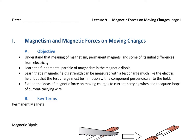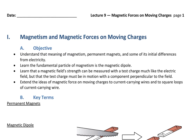We're starting in one chapter, so that would be Lecture 11, but building on that idea throughout the next two chapters. Let's take a look at our objectives. We want to understand the meaning of magnetism, permanent magnets, and some of its initial differences with electricity, and we'll continue to build on these ideas.